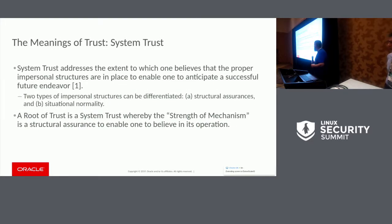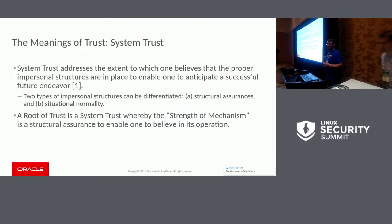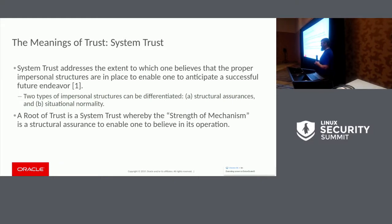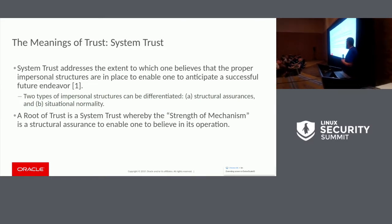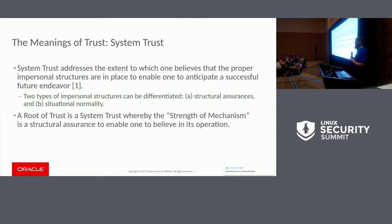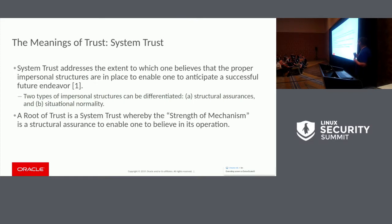The 'Meanings of Trust' is a very good paper written in the 90s that went through the human concept of trust across all areas. They specifically focused on an area called system trust — mechanical or computational systems, which is what we're concerned with here. One of the key things they said is that in order to believe in your system trust, you need impersonal structures that enable you to know that the action you're asking the system to do on your behalf is done correctly. There are two types: structural assurances and situational normality. We're interested in structural assurances, specifically ones with a high degree of strength, so we can believe in our root of trust.